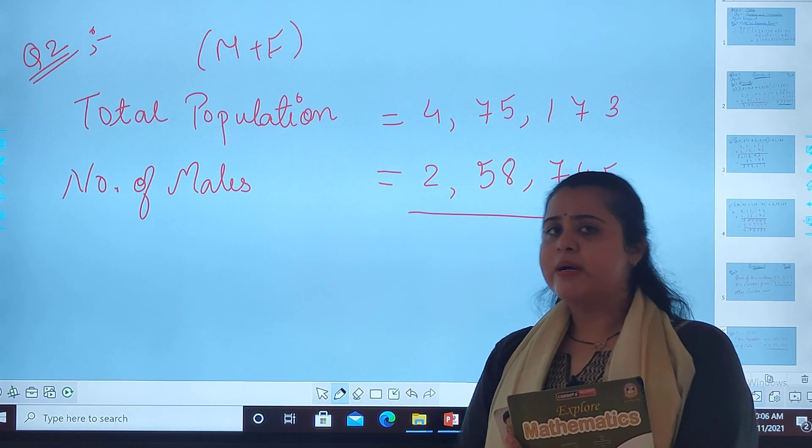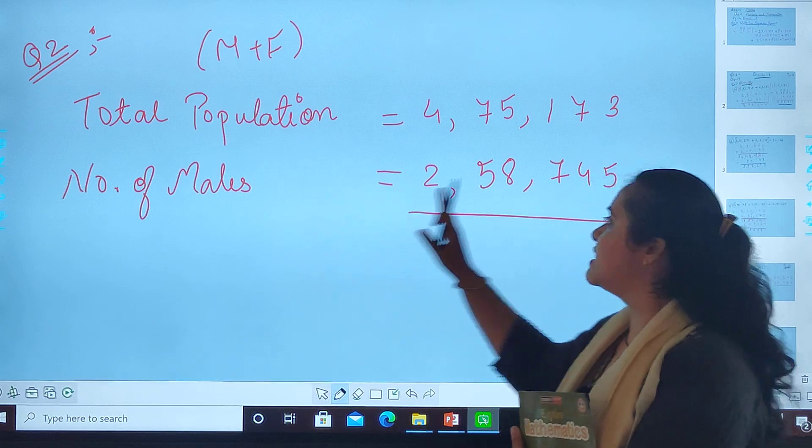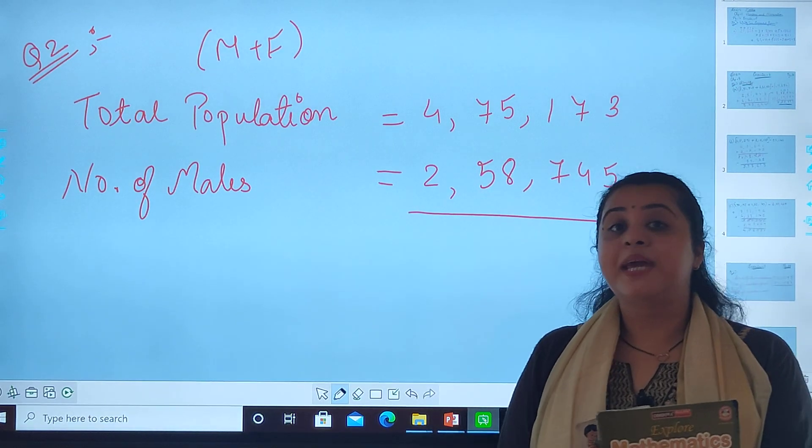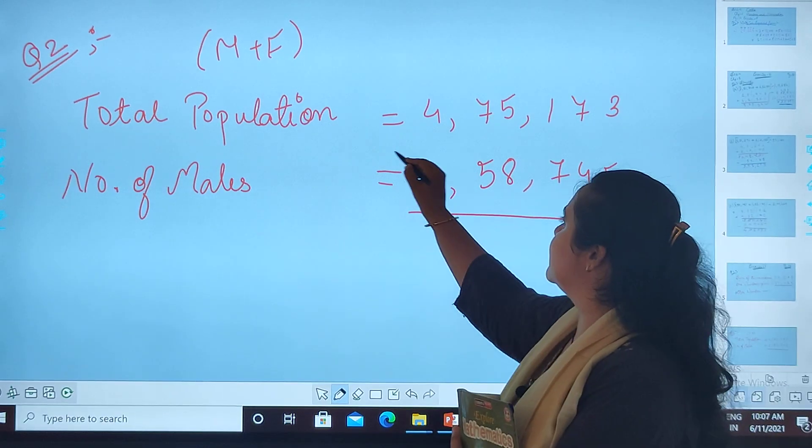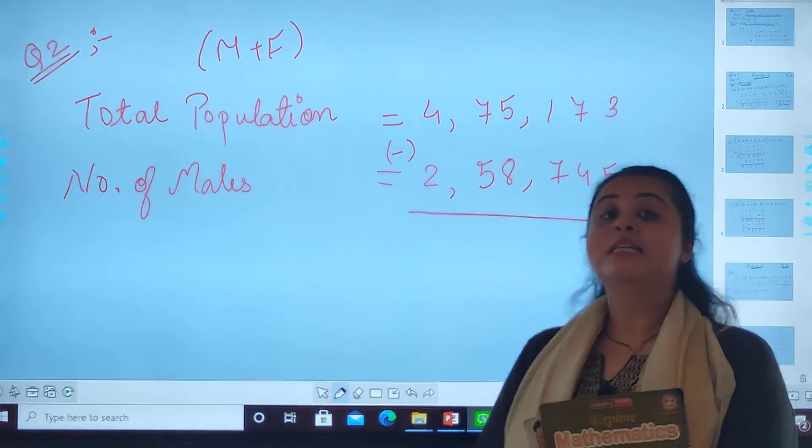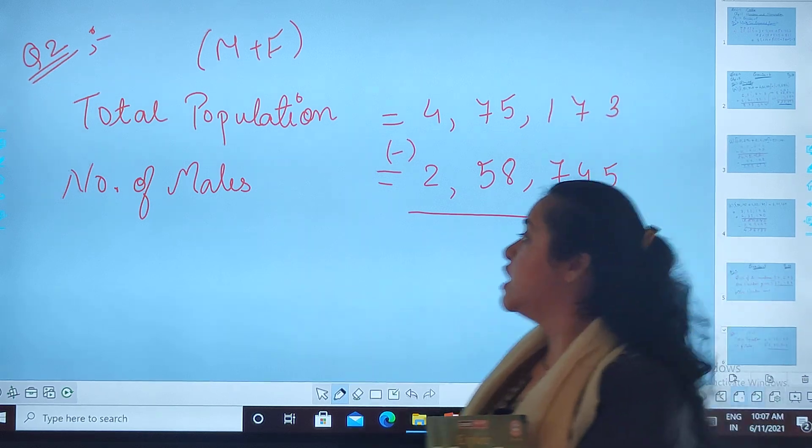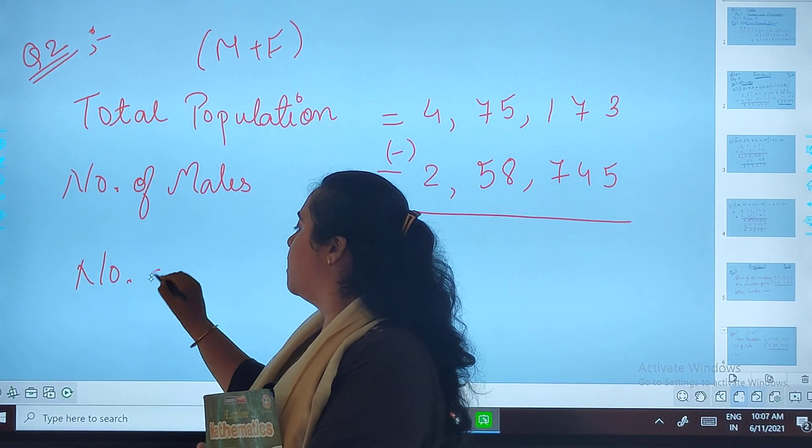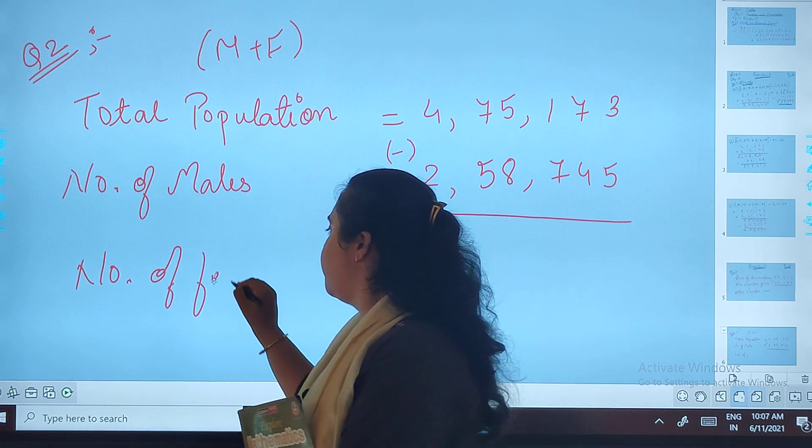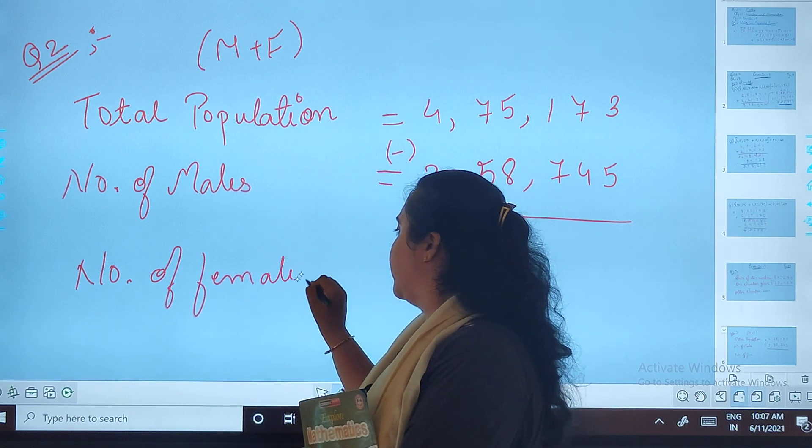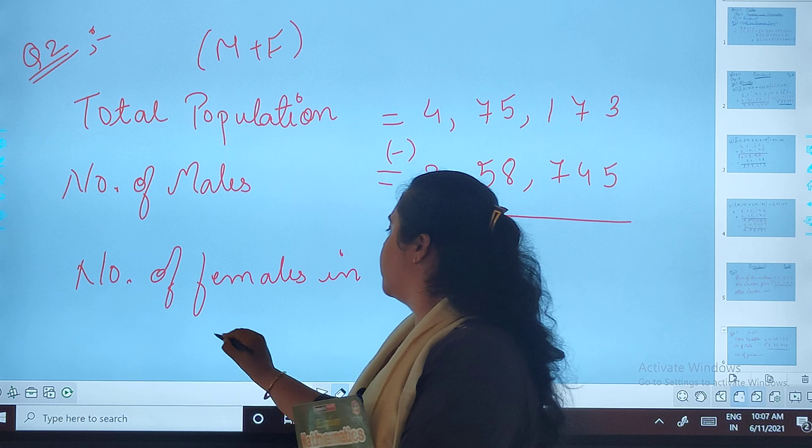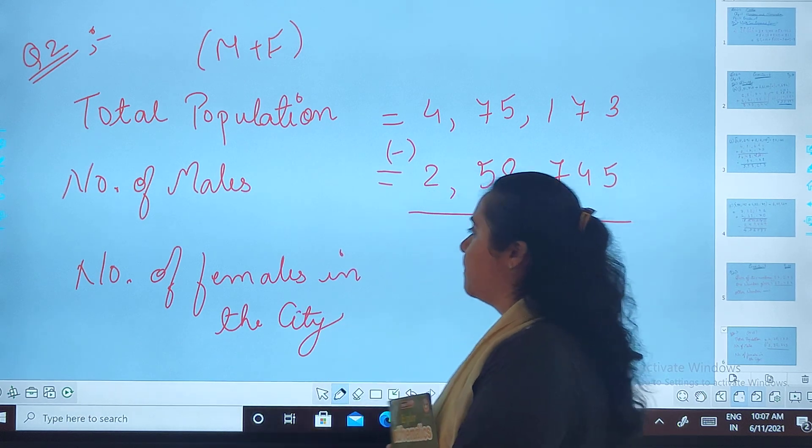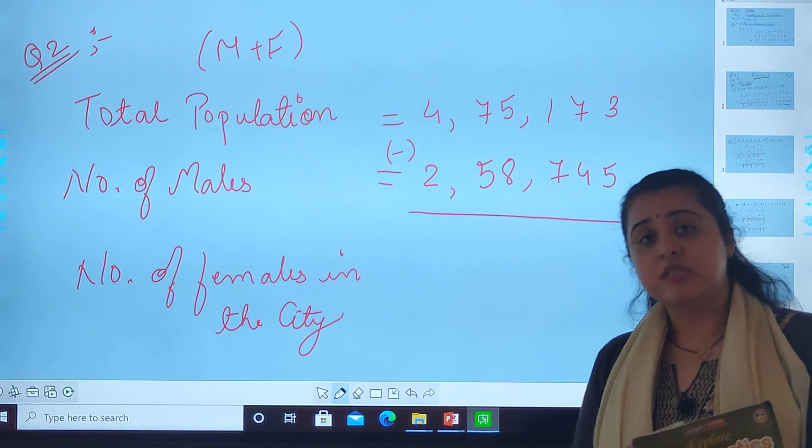So I am given the males in the city. To find the females, I will be deducting these numbers. There will be subtraction. Right? Which will be the number of females in the city. Okay students, done?